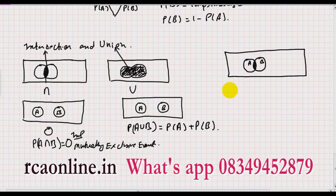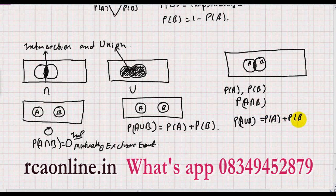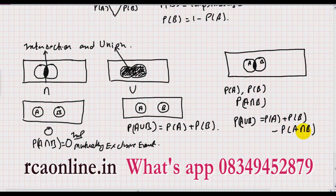When events are not mutually exclusive, the probability of A is P(A), the probability of B is P(B), and the probability of the common area is P(A ∩ B). The union P(A ∪ B) = P(A) + P(B) − P(A ∩ B). We subtract the intersection once because the common part is counted twice — once in P(A) and once in P(B). This formula applies for mutually non-exclusive events.